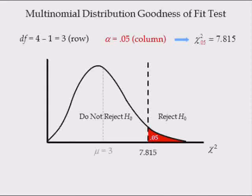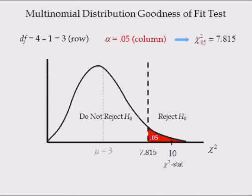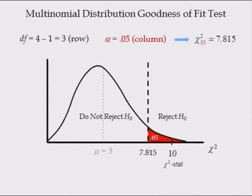The critical value defines the do-not-reject and reject-the-null regions. The chi-squared stat of 10 is in the reject-the-null region because it is larger than the critical value of 7.815. Thus, we reject at the 5% level of significance the assumption that there is no home-style preference.